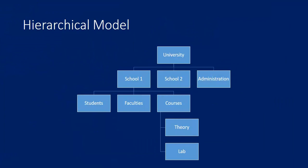In the hierarchical model, data is stored in a hierarchy. A parent node has access to its children's data, but siblings do not have access to each other. For example, a university is the root of the hierarchy with three children: School One, School Two, and Administrative Department. School One may have students, faculties, and courses, which may further branch into theory and lab. This arrangement is called the hierarchical model.